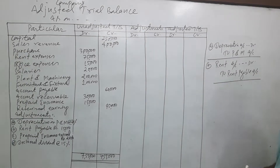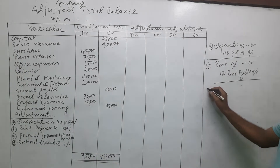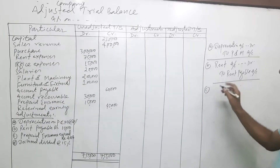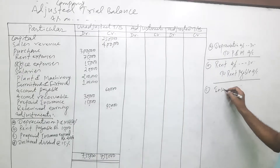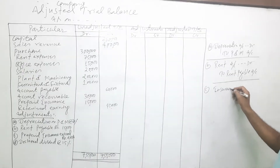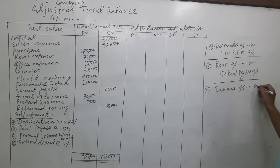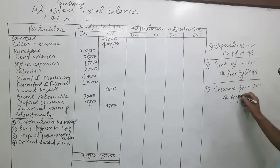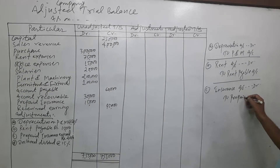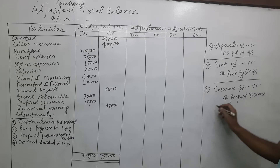For prepaid insurance, it is now expired. The entry is: insurance expenses account debit to prepaid insurance. Prepaid insurance expired account debit to prepaid insurance. This is the entry.